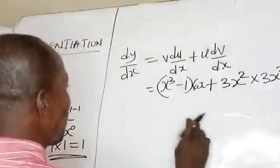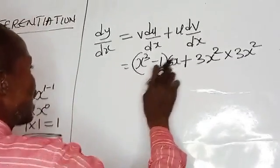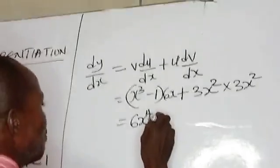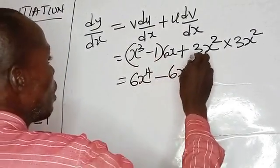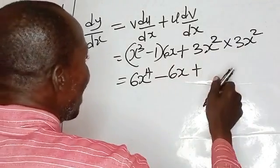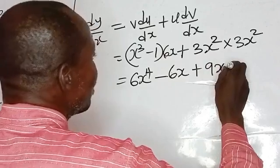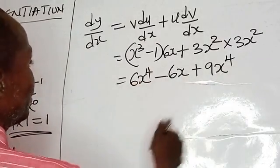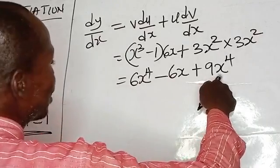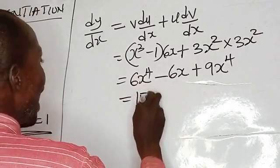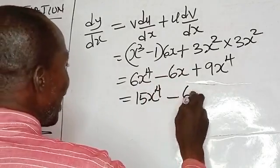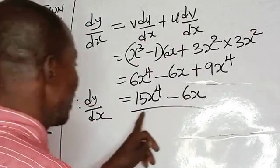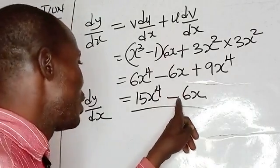Now let's expand the brackets. 6x times x cubed gives 6x to the power 4, minus 6x times 1 gives minus 6x, and 3x squared times 3x squared gives 9x to the power 4. Collecting like terms: 6x to the power 4 plus 9x to the power 4 equals 15x to the power 4 minus 6x. Therefore dy/dx equals 15x to the power 4 minus 6x.